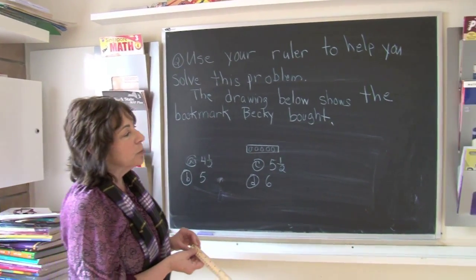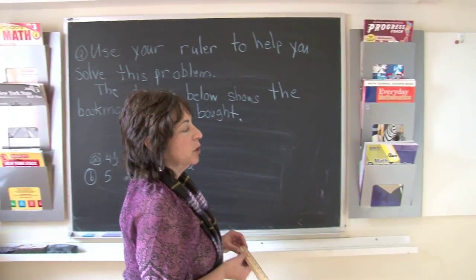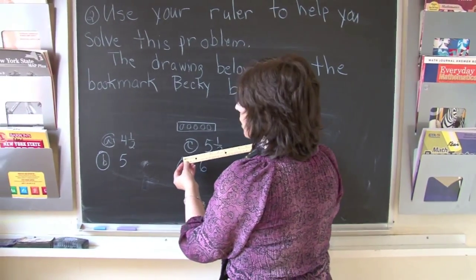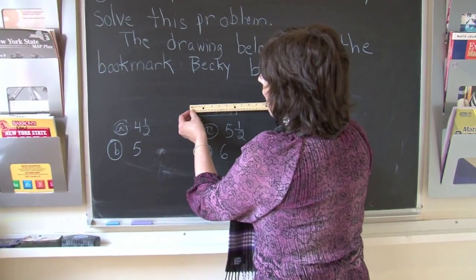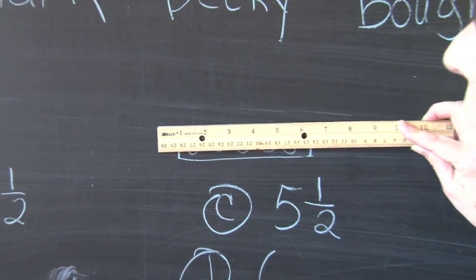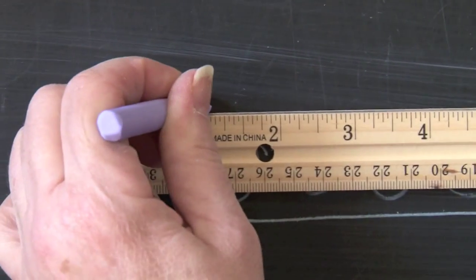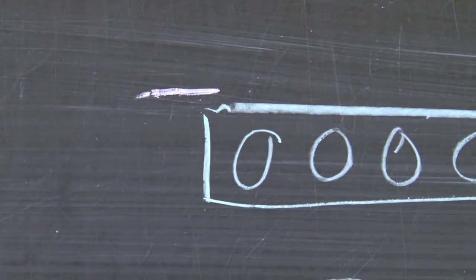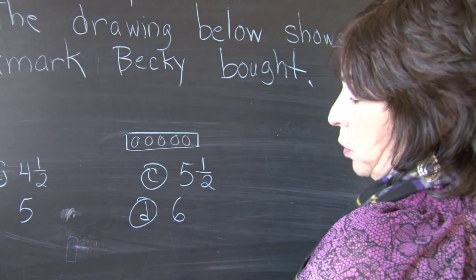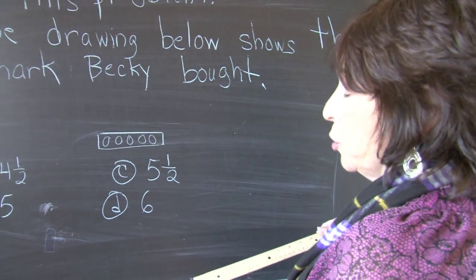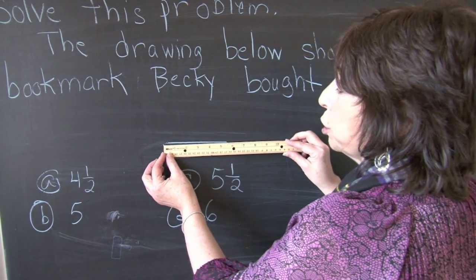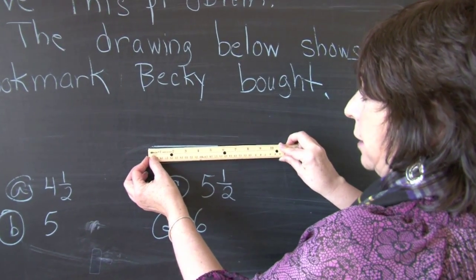Now what a lot of you do, boys and girls, when you're using a ruler, you start with number one. If I start at number one, I lose this whole inch. I lose that inch. That is an inch that counts. So you cannot start at number one when you are measuring with the ruler.